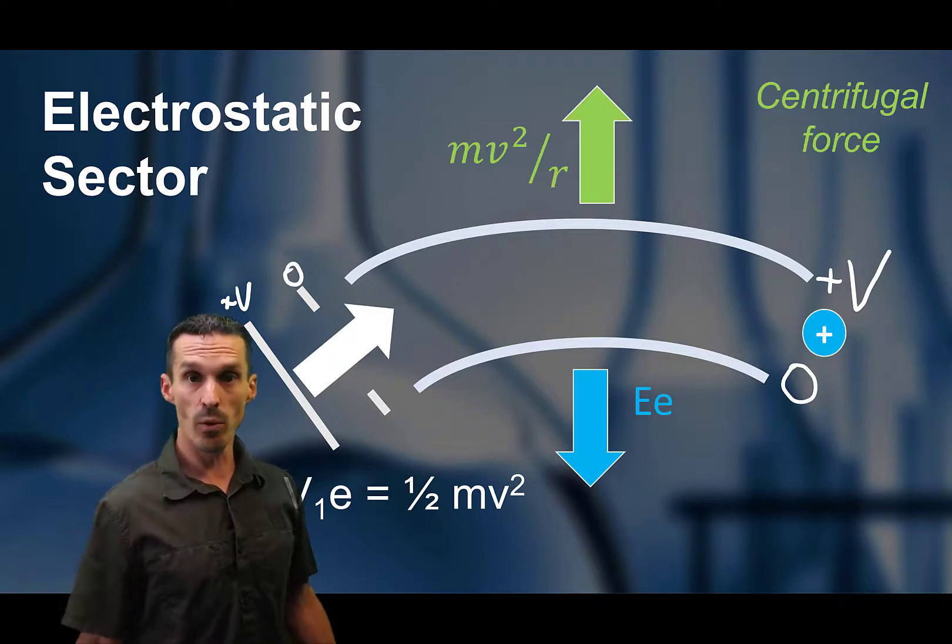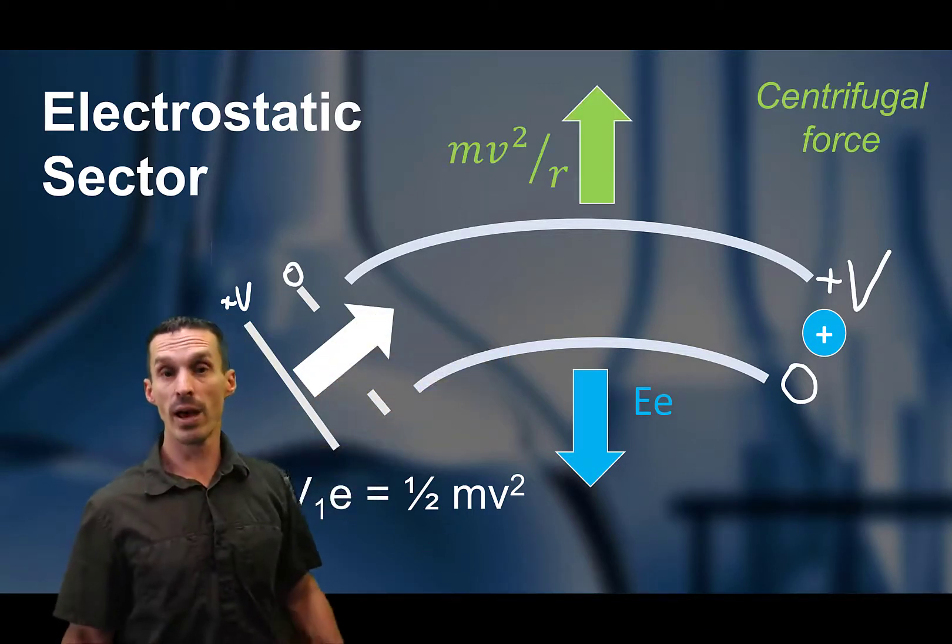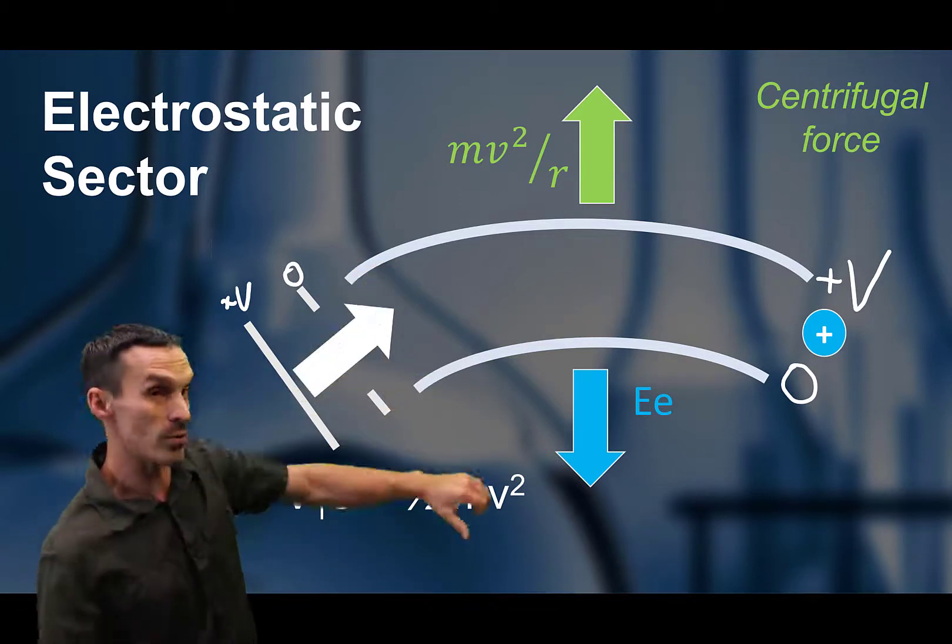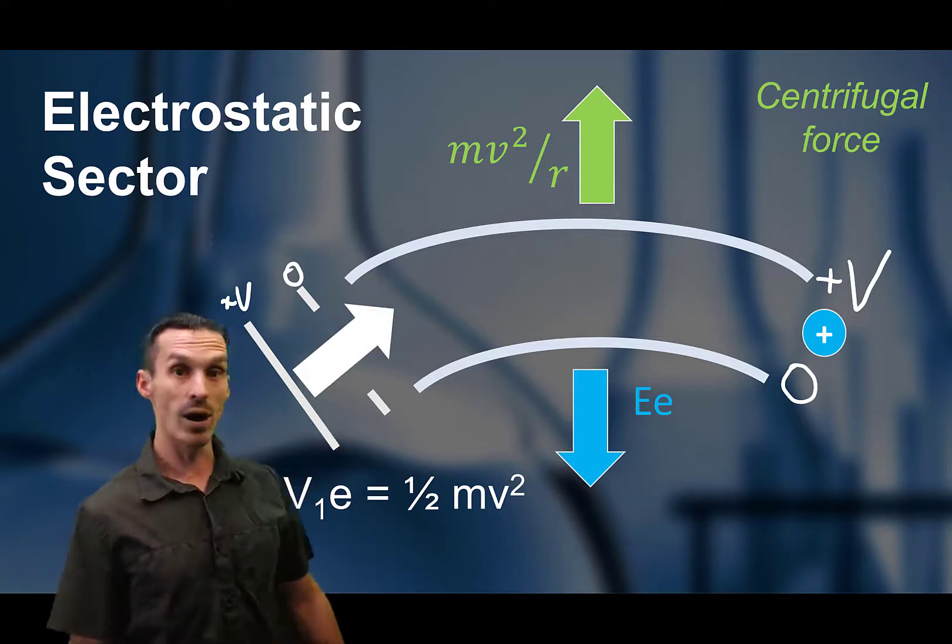So there is one more force here. Because the ion is being forced through a curved path, we have a centripetal force as well. It's kind of Newton's law, right? So you've got forces coming up and force going down.